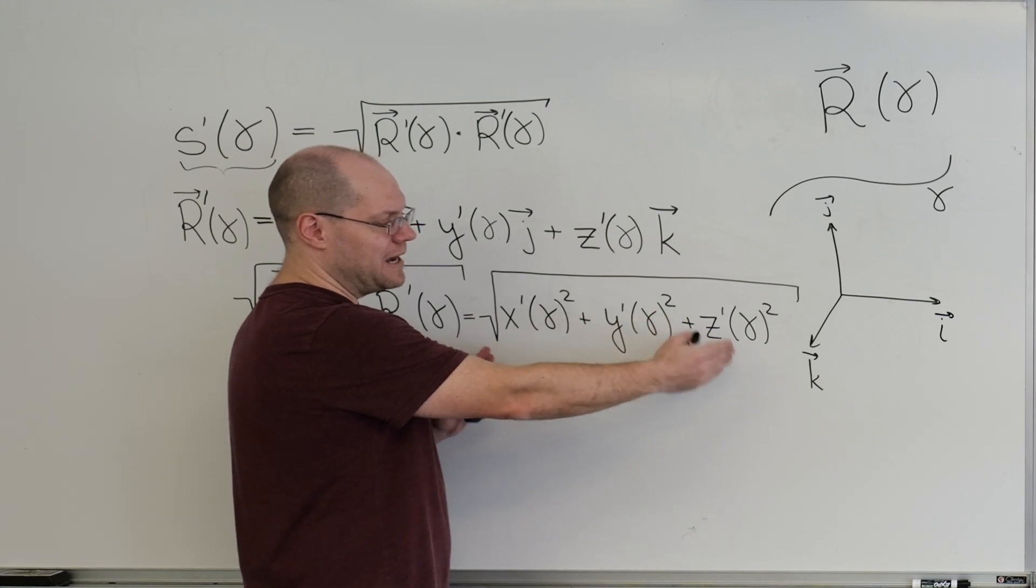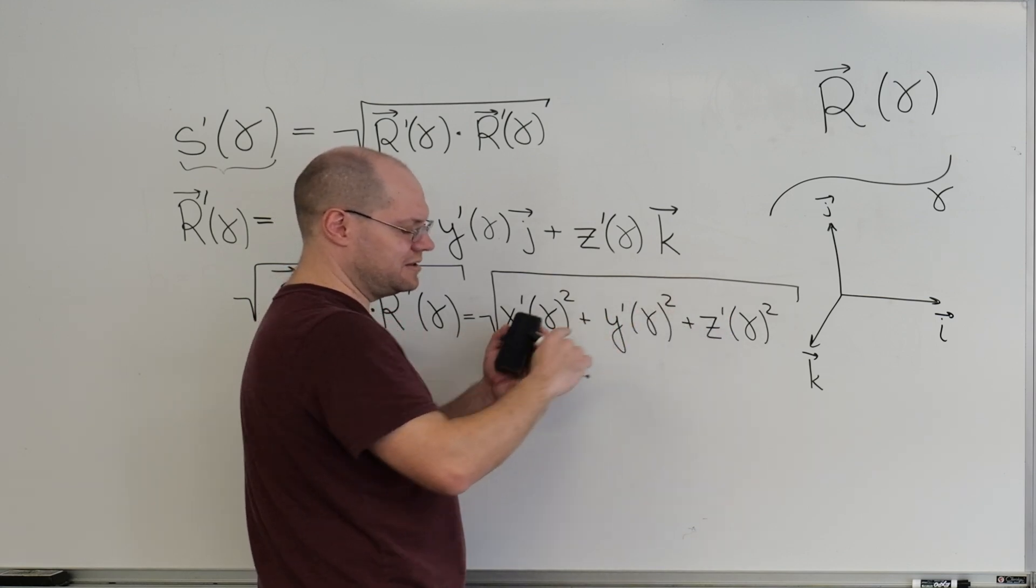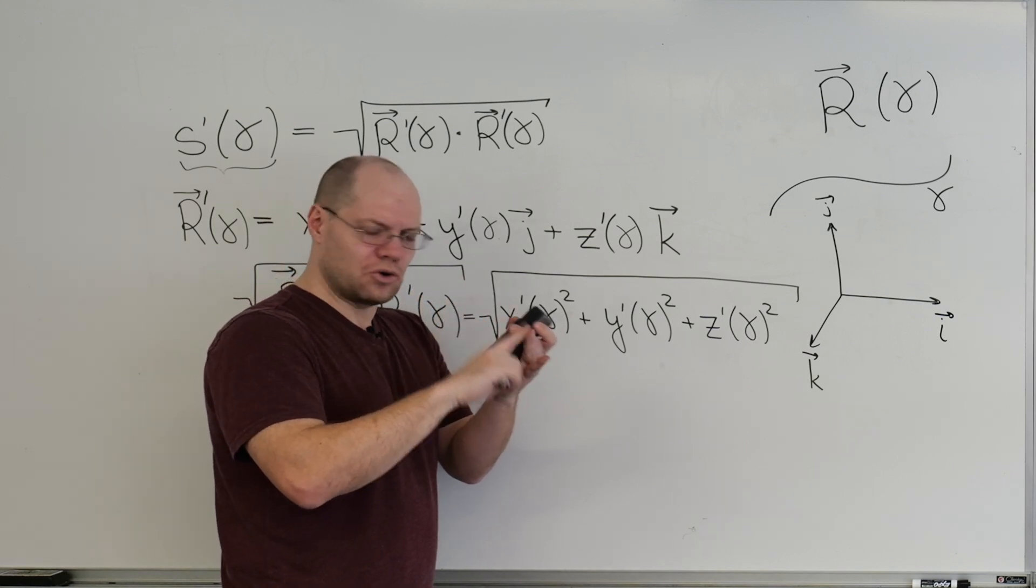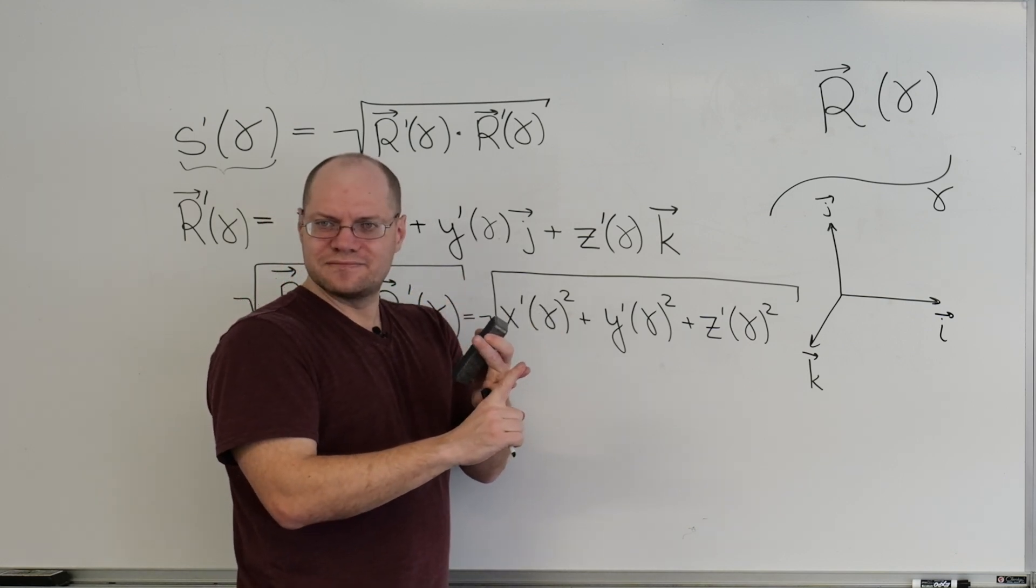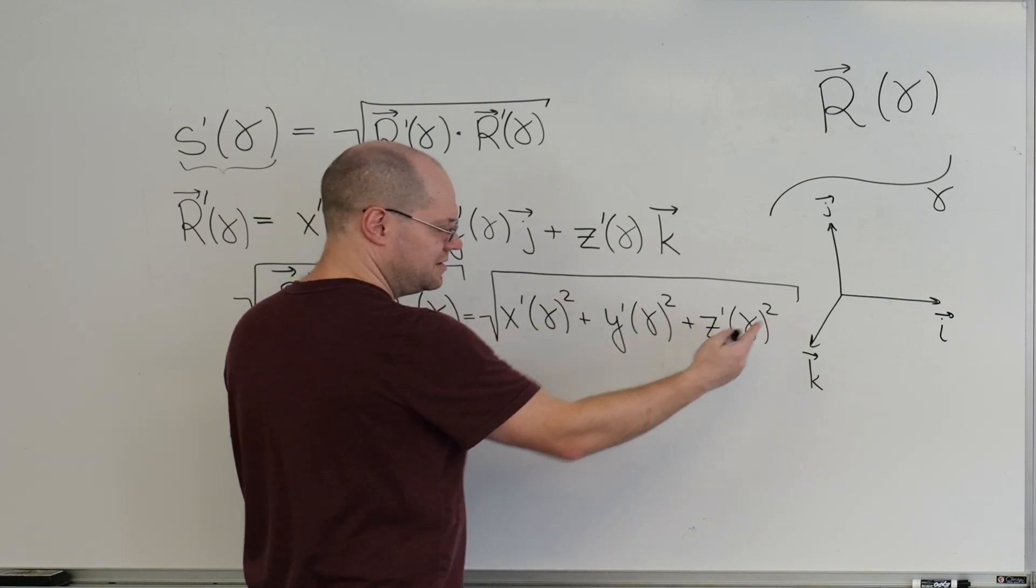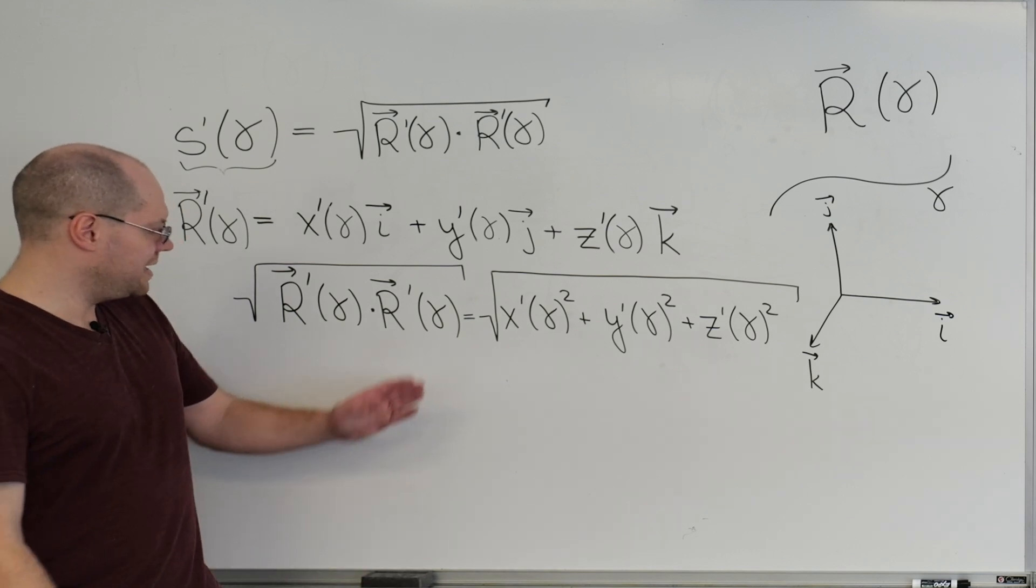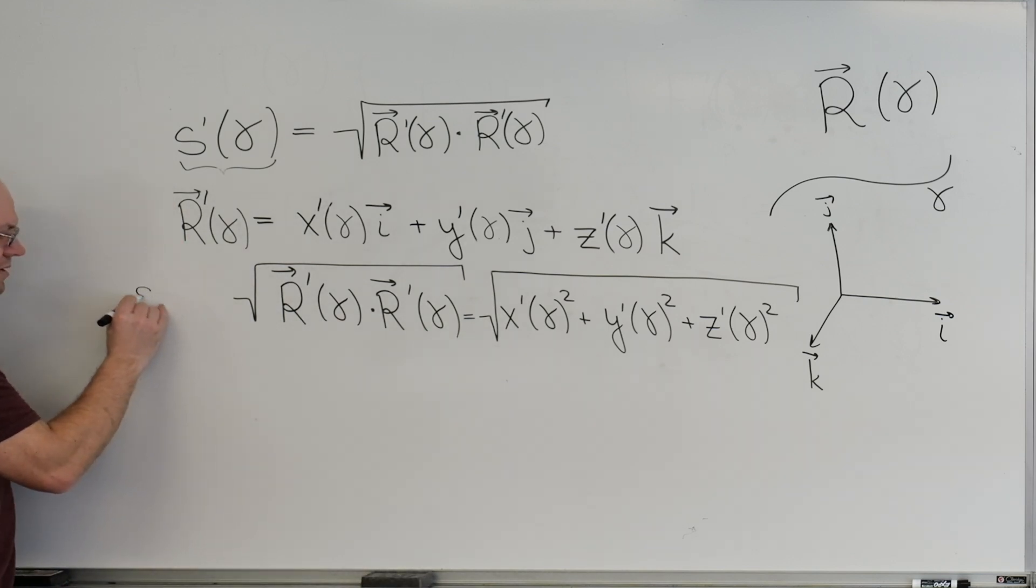So one of the problems on the final is to calculate the curvature and the torsion of a helix. So you will need this formula. You'll introduce Cartesian coordinates in the ambient space. And boom, you have the formula for the derivative of arc length as a function of gamma. So that's what you'll need.